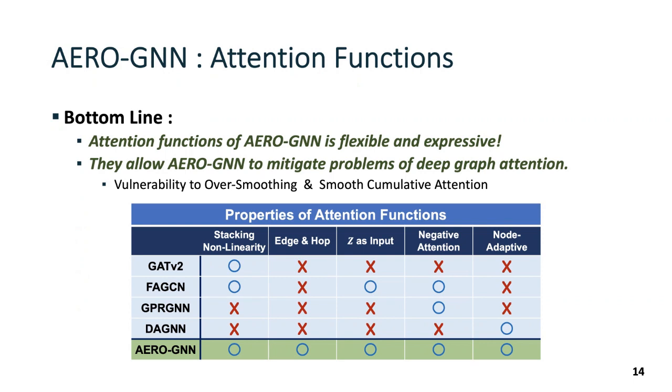In the table, we see that the attention functions of ArrowGNN is the most flexible one with many desirable properties. Most importantly, this set of properties allow ArrowGNN to mitigate the proposed problems of deep graph attention.